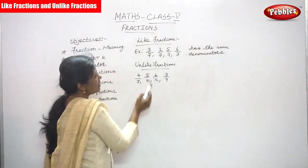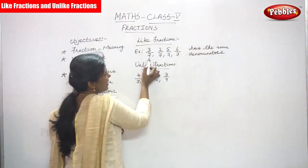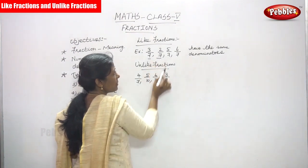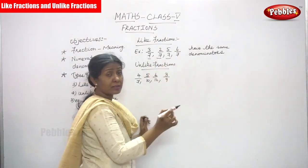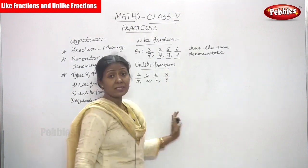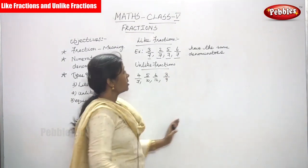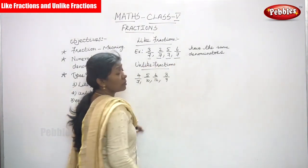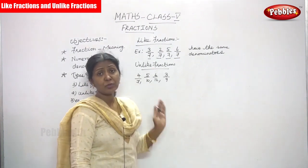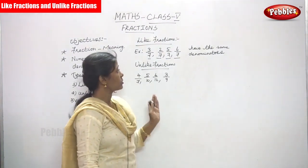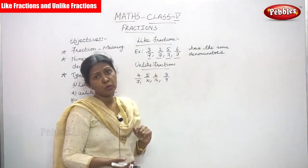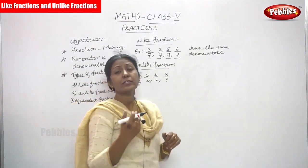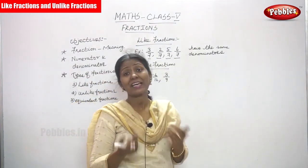So look at the denominators. 3 by 7 — 7 is the denominator. 2 by 7 — 7 is the denominator. 5 by 7 — 7 is the denominator. And 6 by 7 — 7 is the denominator. So all these fractions have the same denominator. If the denominator is same in all the fractions, it is called as a like fraction.